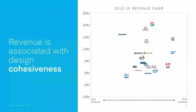Some other research shows that design consistency is also essential. There's an agency called Interbrand that does a study ranking the 200 best brands. The X axis shows how cohesive a brand's design is, and the Y axis shows how revenue changed between 2012 and 2015. You can kind of squint and see a positive correlation between the cohesiveness of design and revenue growth — with Google and Apple leading the pack, but also companies like Toyota doing cool stuff too. There are two sources indicating a clear positive correlation between design consistency and revenue growth.